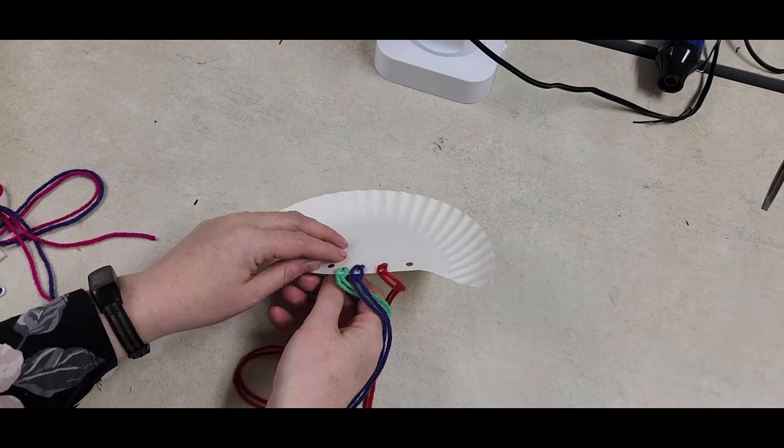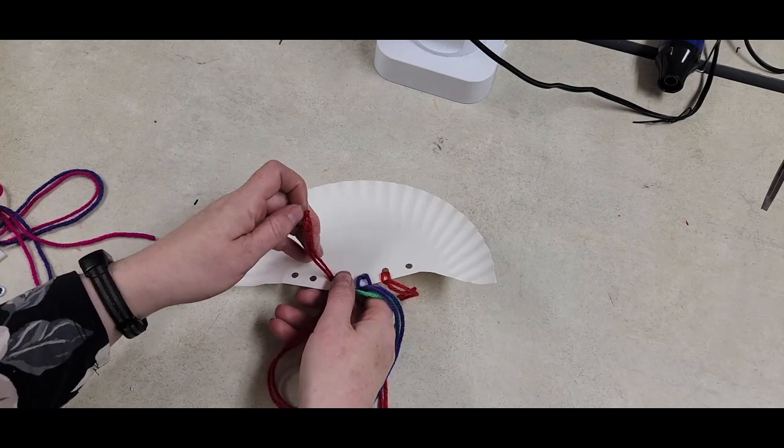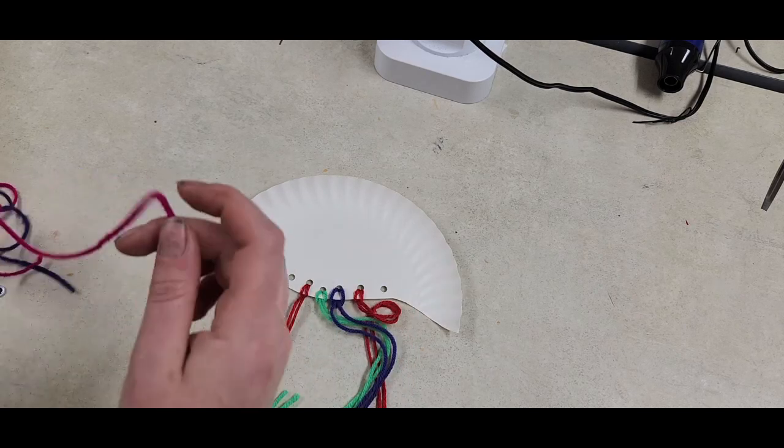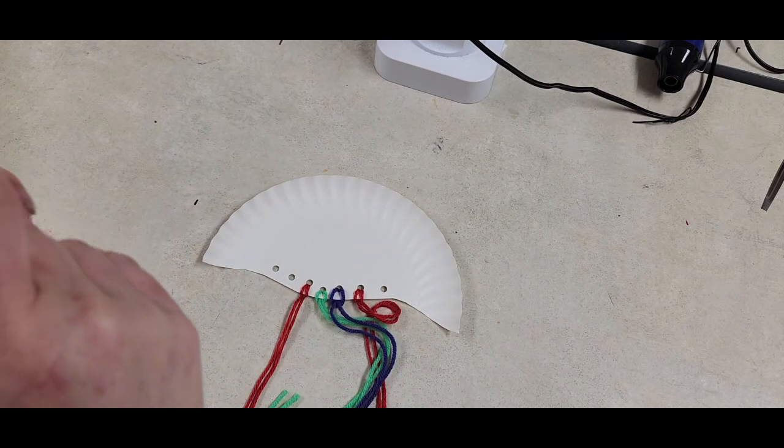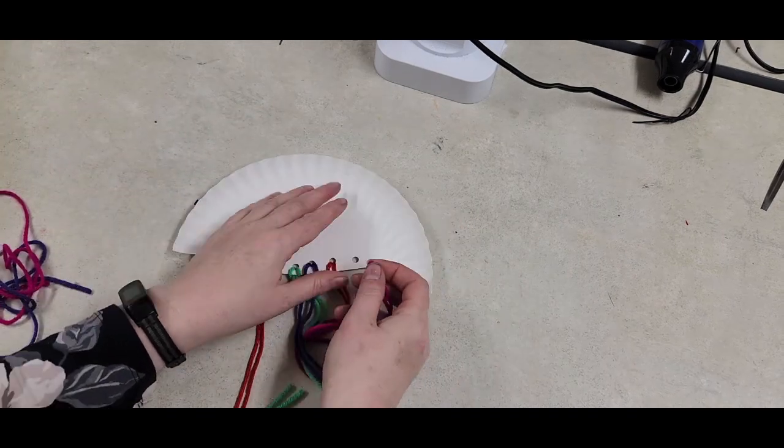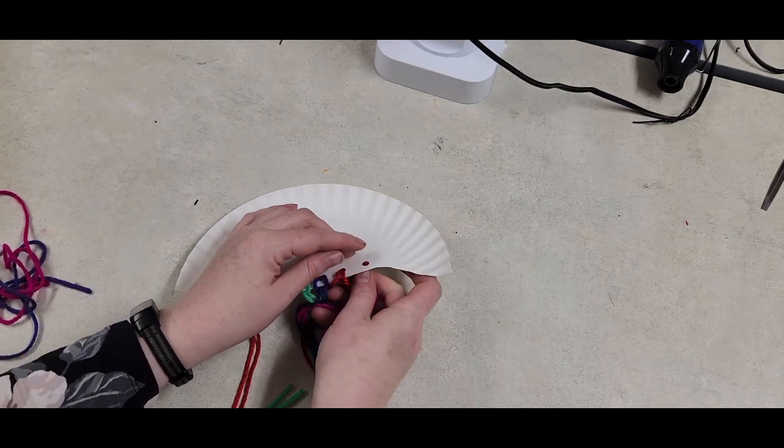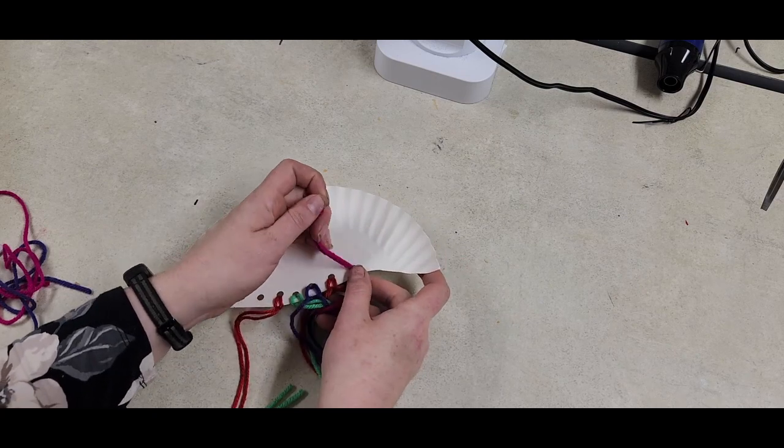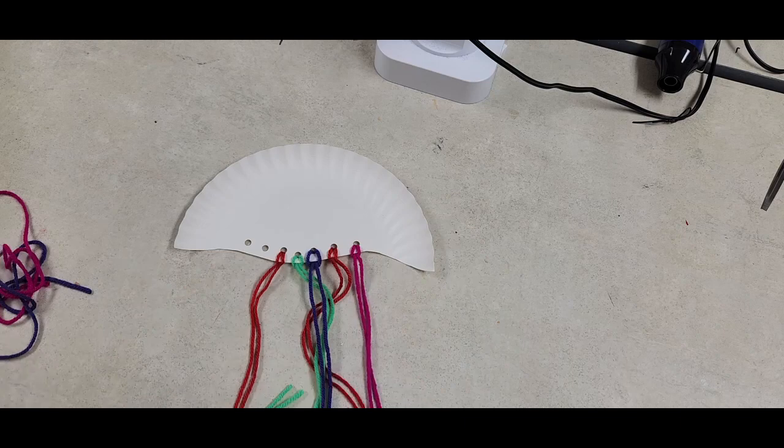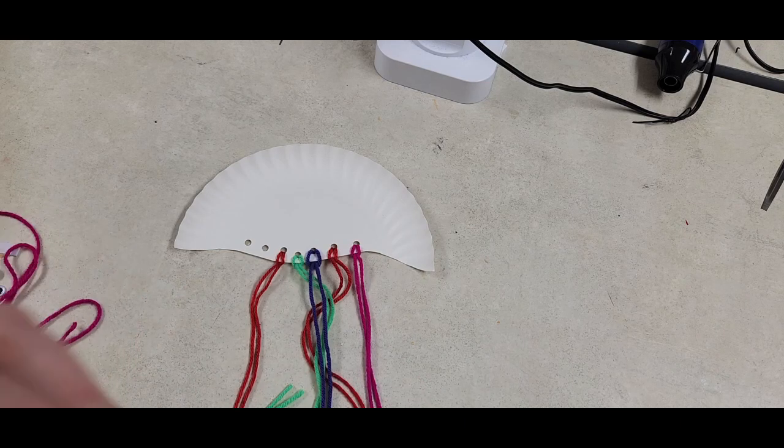Each of your yarn pieces should be a different color. Mine are not because when I went back to make yarn for myself, I could not find my yellow or orange. So I ended up with a little extra pink and purple today, and that's okay. We just have a very warm-toned jellyfish going on here, which is not surprising considering it is very warm outside.